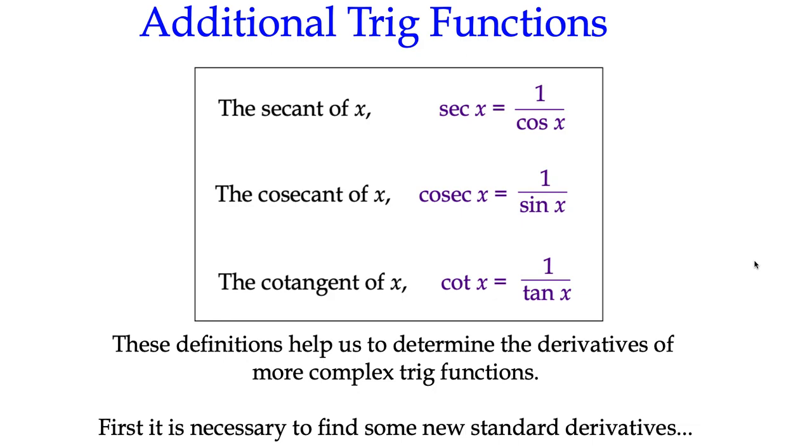So if we ever come across a function where we've got 1 over cos x, we can rewrite that as sec x. If we've got 1 over sin x, we can rewrite it as cosec x. And similarly with 1 over tan x, we could replace that with cot x.